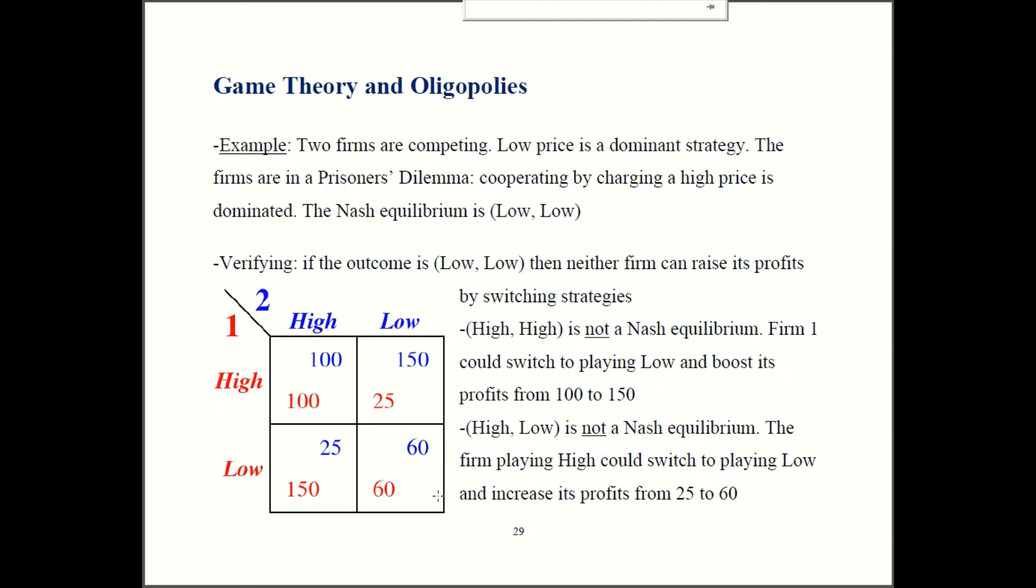So if the firms could collude, what they would want to do is agree to charge the high price. They both are getting profits of 100 in that case, and that would be better than this Nash equilibrium. Unfortunately for the firms, but fortunately for customers and the rest of society, this outcome high-high is not a Nash equilibrium.